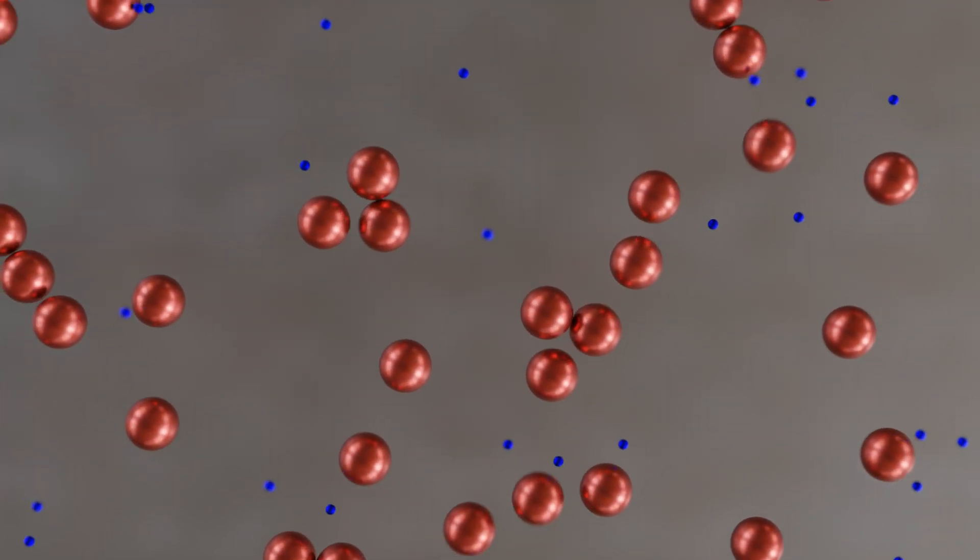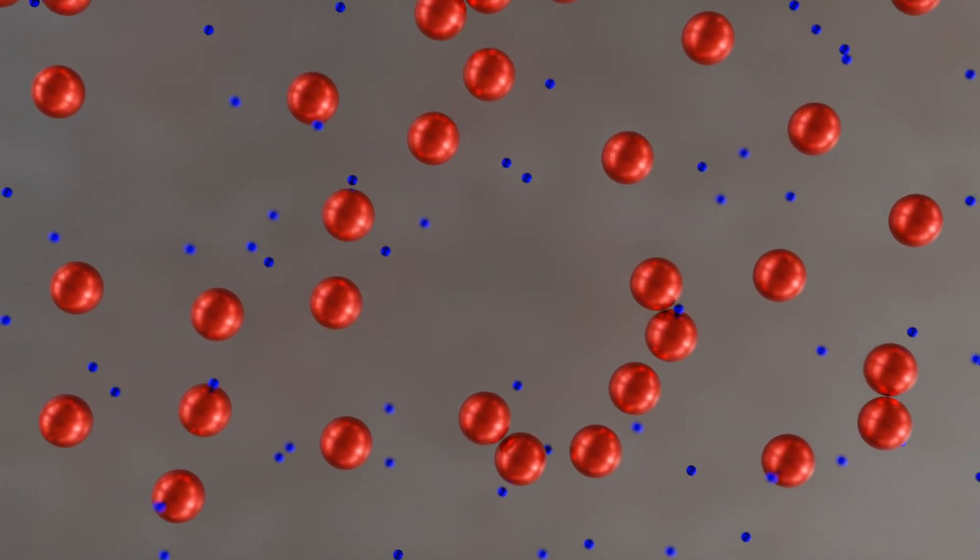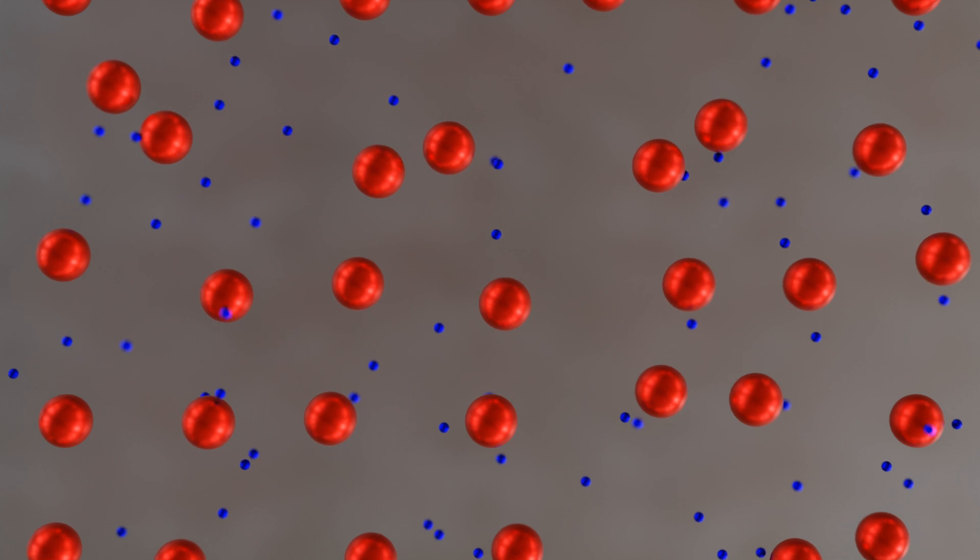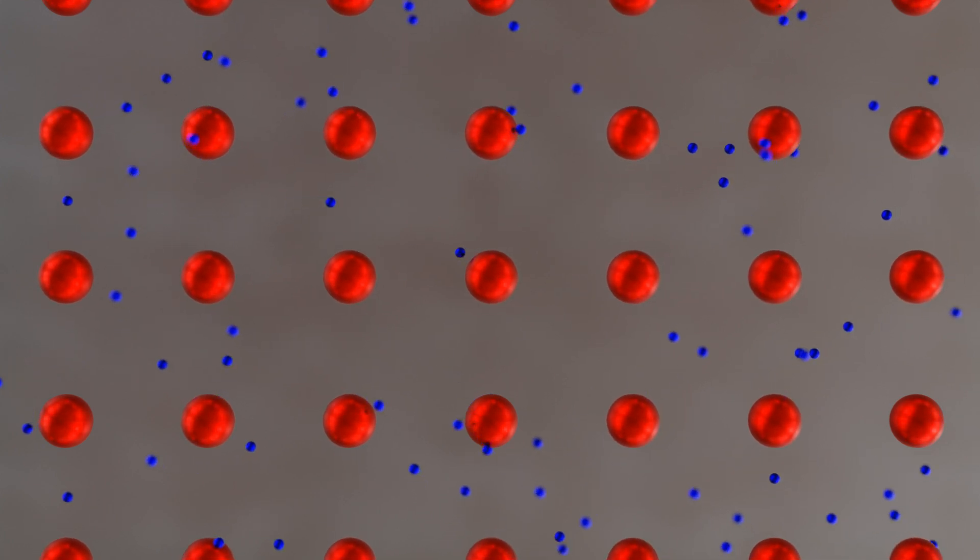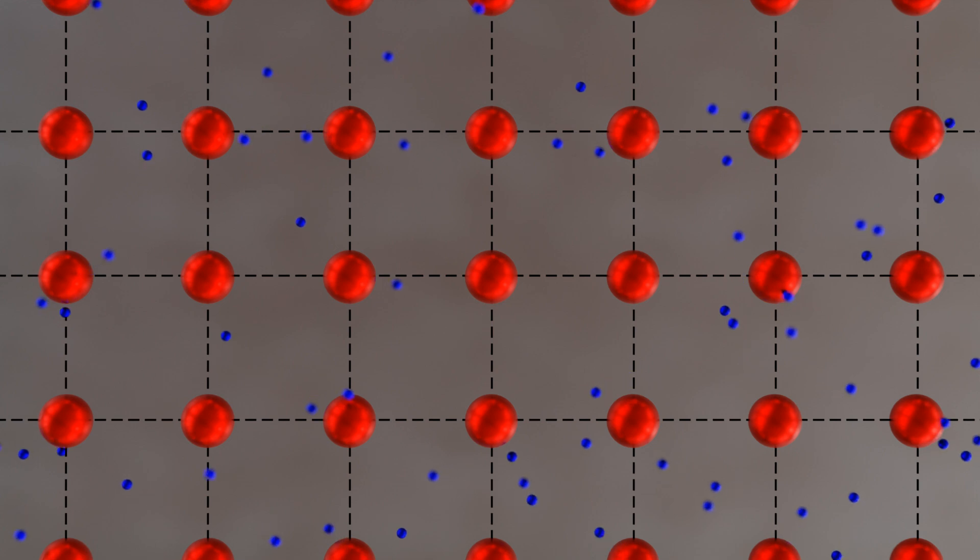By donating the electrons, electrically positively charged metal ions remain. Due to the released electrons, a kind of gaseous state of free electrons forms around the positive cations. This is also known as electron gas.